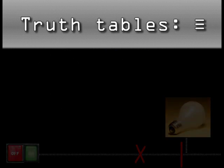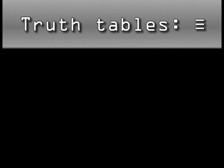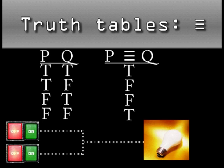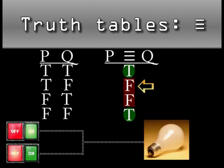Finally, the biconditional means that the two propositions, P and Q, have the same value. The statement, P if and only if Q, is true when both P and Q are true, or both P and Q are false. In any other case, the biconditional is false. This makes the two propositions logically equivalent, so they must return the same value.